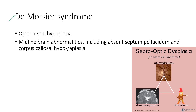Next is De Morsier syndrome, also known as septo-optic dysplasia. Optic nerve hypoplasia can be seen in De Morsier syndrome. Other features include midline brain abnormalities including absence of the septum pellucidum and corpus callosum hypo- or aplasia. The triad of De Morsier syndrome is optic nerve hypoplasia, absence of septum pellucidum, and pituitary dwarfism.